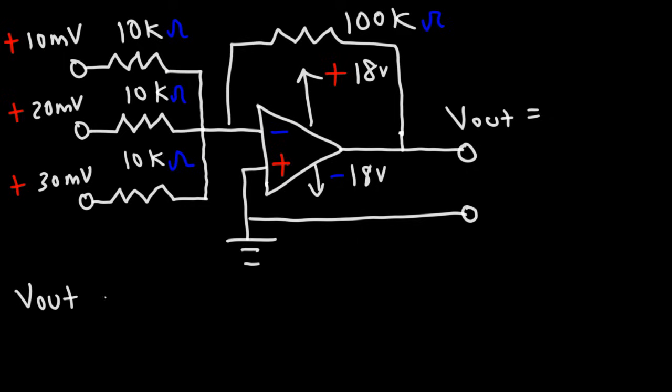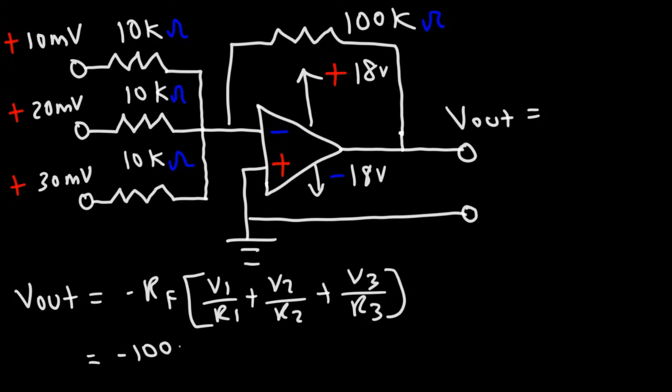So let's use the same formula. It's going to be the feedback resistor times V1 over R1 plus V2 over R2 plus V3 over R3. The feedback resistor is 100 kilo ohms, so I'm just going to write 100k. And then V1, that's going to be 10 millivolts. I'm just going to write 10 instead of 10 millivolts. R1 is 10k. V2 is 20 millivolts. R2 is 10k as well. V3 is 30 millivolts.